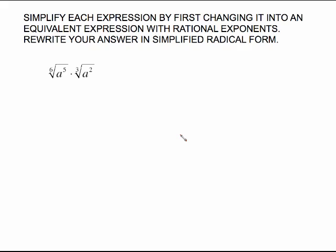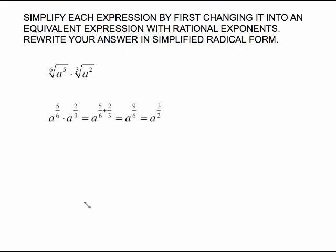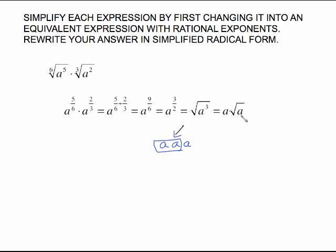For this one, go to rational exponent form: a to the five-sixths times a to the two-thirds. Keep the base and add the exponents. Common denominator is six: five-sixths stays, two-thirds becomes four-sixths. Add to get nine-sixths, which reduces to three-halves. Go back to radical form — three-halves means the square root of a cubed. For the square root we don't show the index. To simplify, write out your a's: you have a pair of a's, so one a comes out with one a staying inside. That is the simplified answer: a times the square root of a.